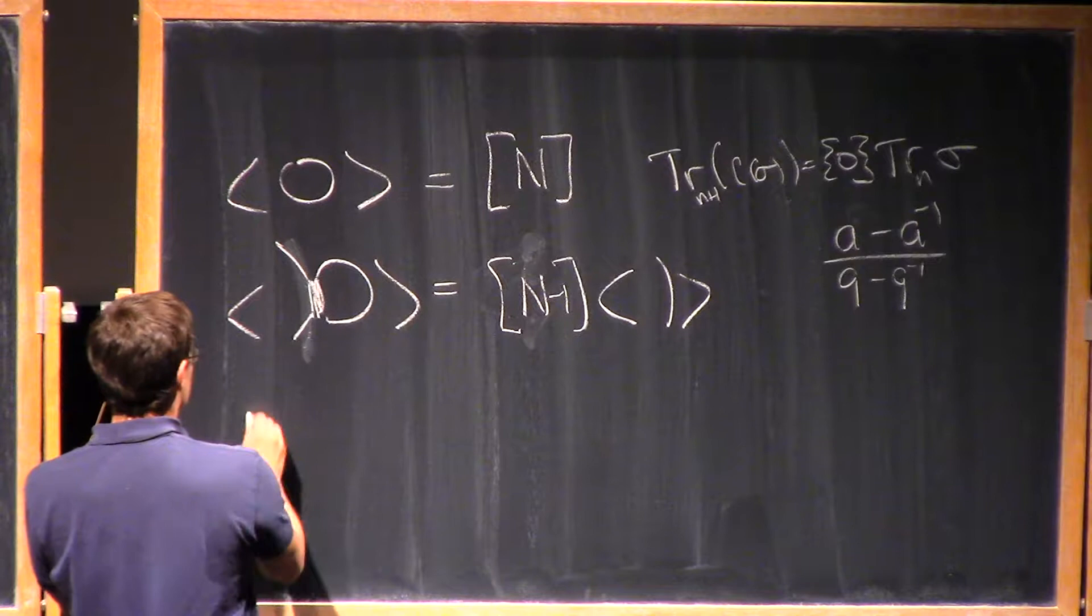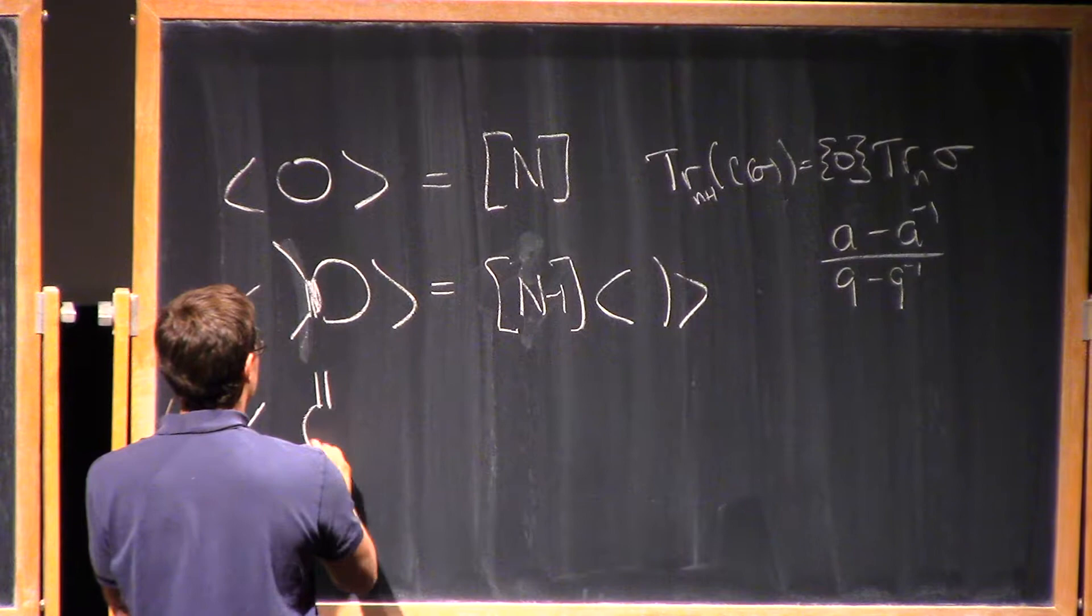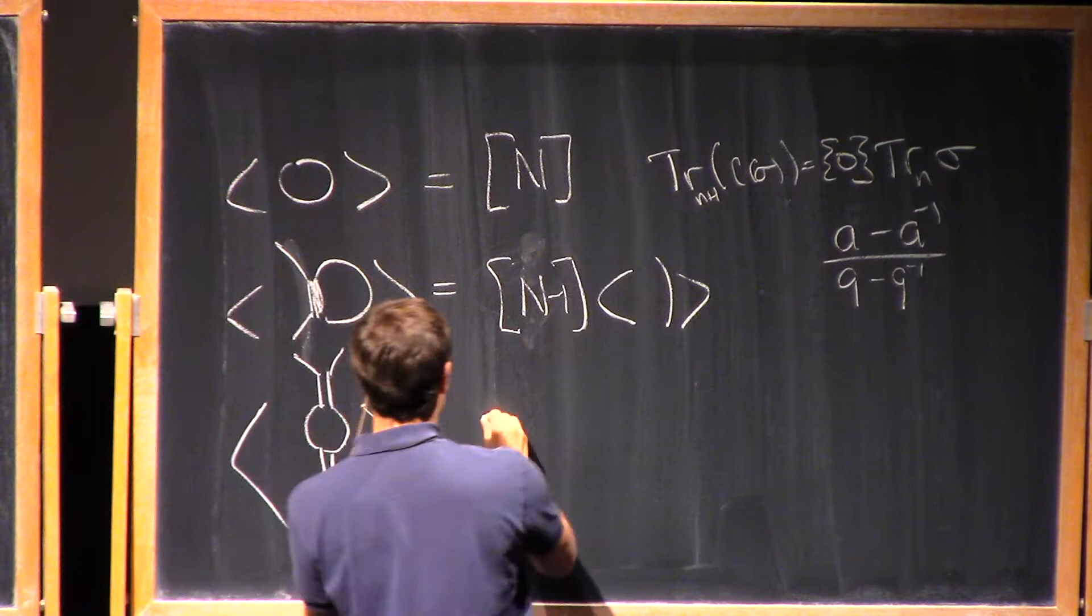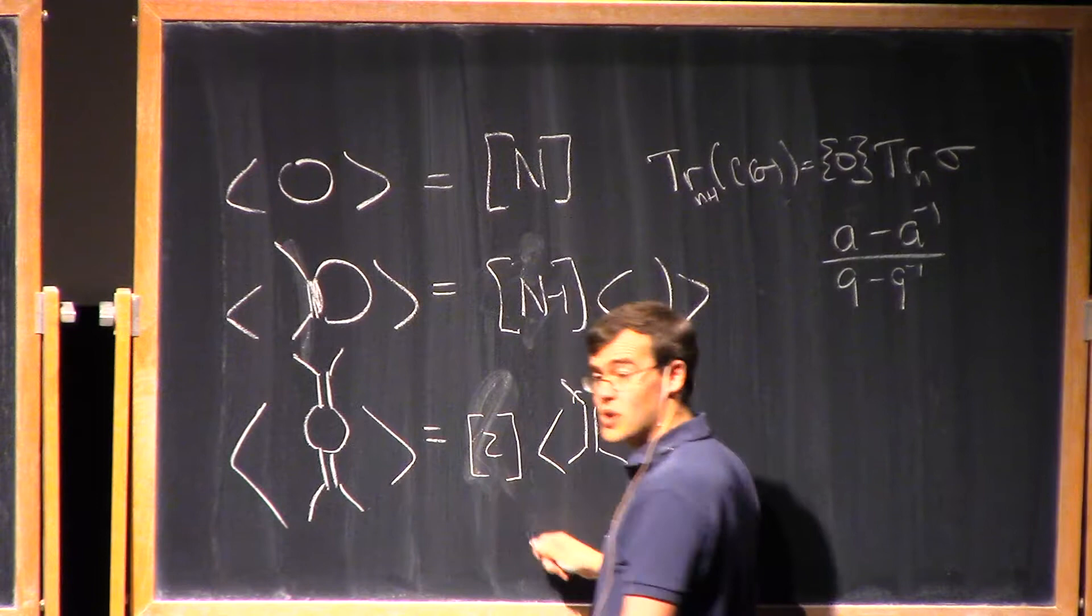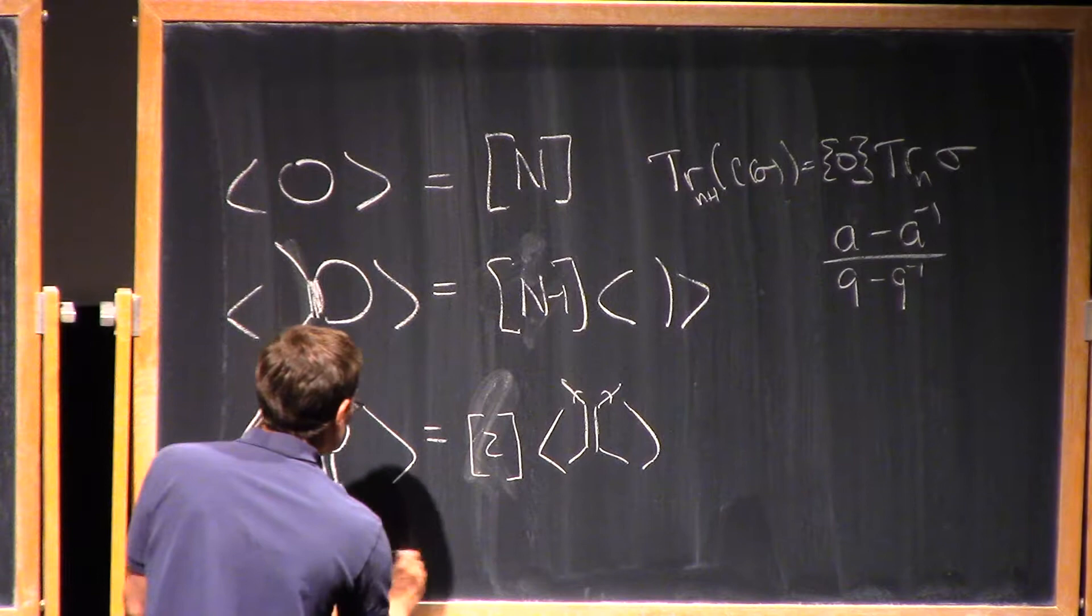This is the condition that trace of Yoda of sigma was squiggly zero times trace of sigma. And similarly, there was another condition here that had Yoda of sigma times BN and that's this. And notice that if I take squiggly zero, that's A to the N minus A inverse over Q minus Q inverse and set A equal Q to the N, I get quantum N. And so now there's some other relations. So maybe let me write down one more. If I have a little bubble like this, that's the same thing I can pinch the bubble out at the cost of inserting a quantum two.